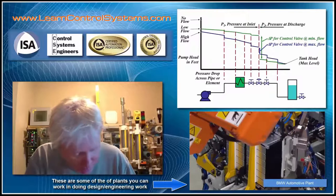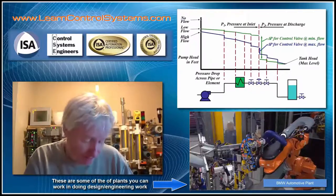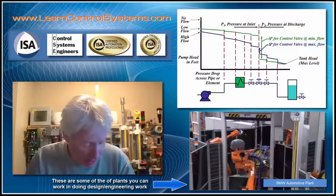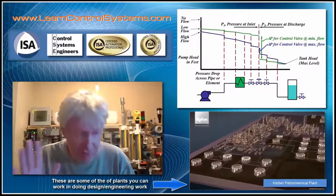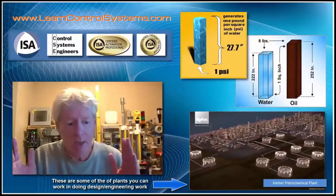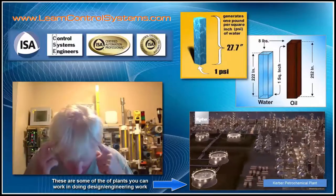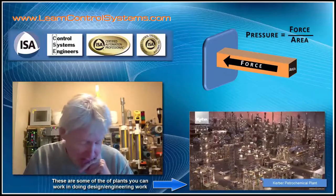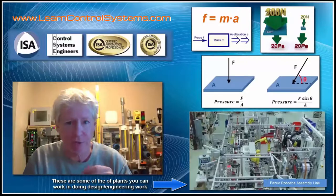When it comes to instrumentation and understanding process control measurement — even though it spans other disciplines — the first thing we're going to talk about is weight and force. Weight is force: mass times acceleration gives us force, and force over distance is work. Everything is based on differential force or differential work.